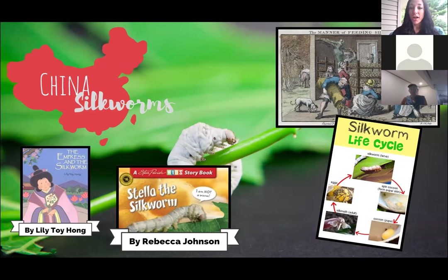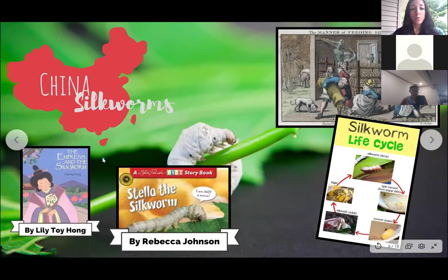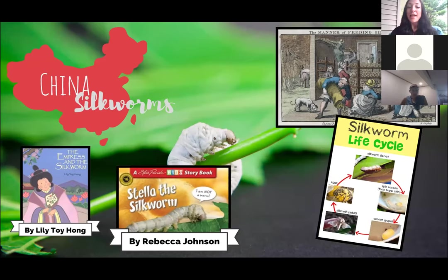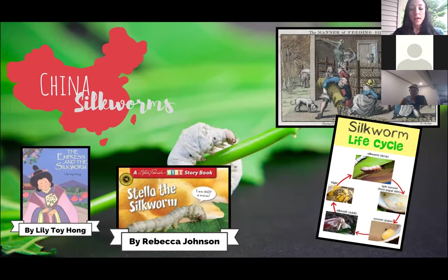Moving on, we have silkworms in China — looking at the use of insects. On the left-hand side is the book The Empress and the Silkworm, looking at ancient history from 2700 BC. It's a legend of the discovery of silk and how we could use silkworms to produce clothing. For junior high and high school level, you could tie this into ancient history, looking at the Silk Road and trade.